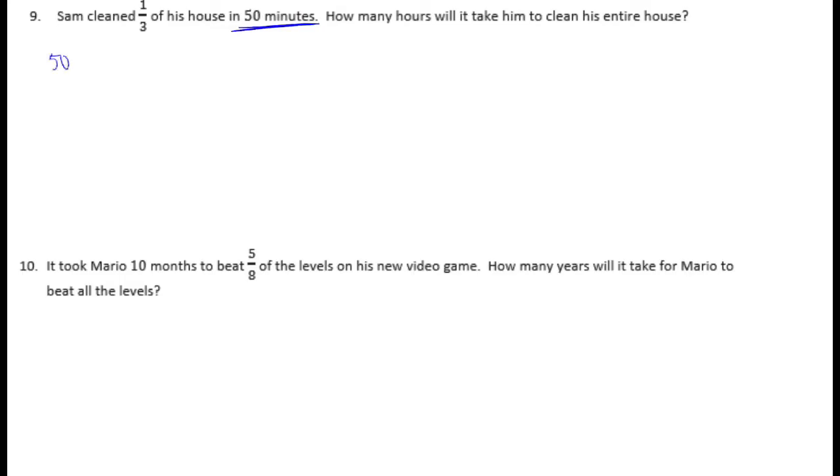So 50 minutes would be equal to 1 60th times 50, because 1 60th is 1 minute out of 60 times 50. So we get 50 60th, which we can reduce to 5 sixths. So that's 5 sixths of an hour.